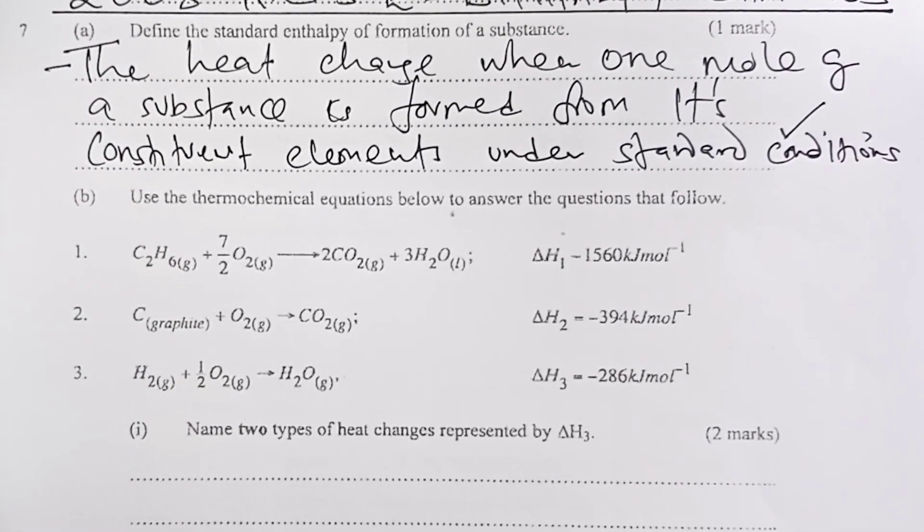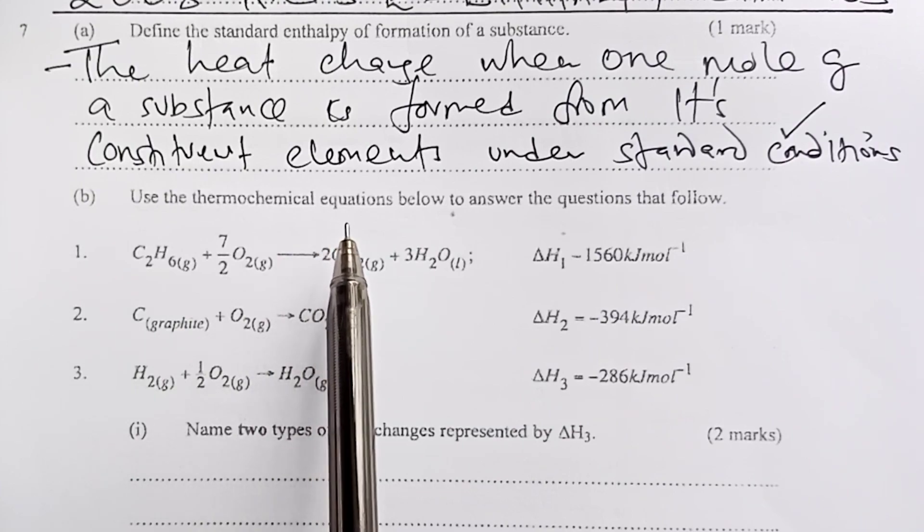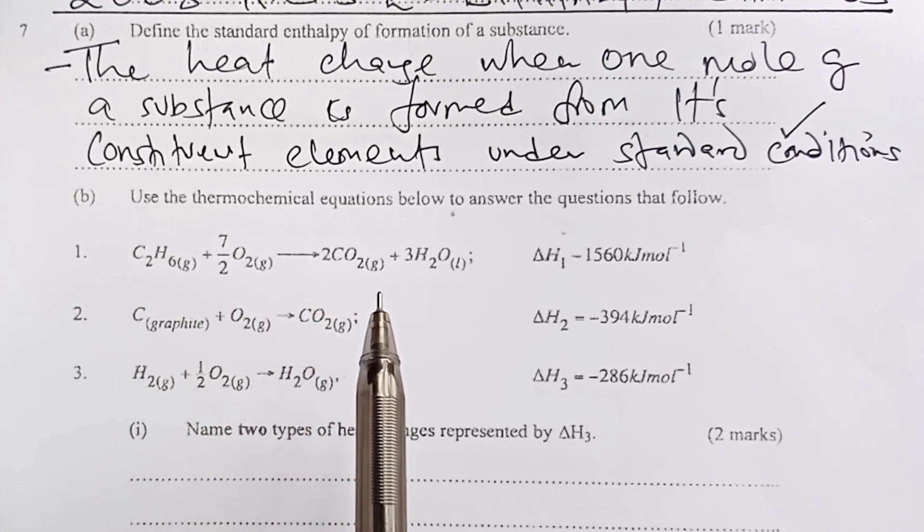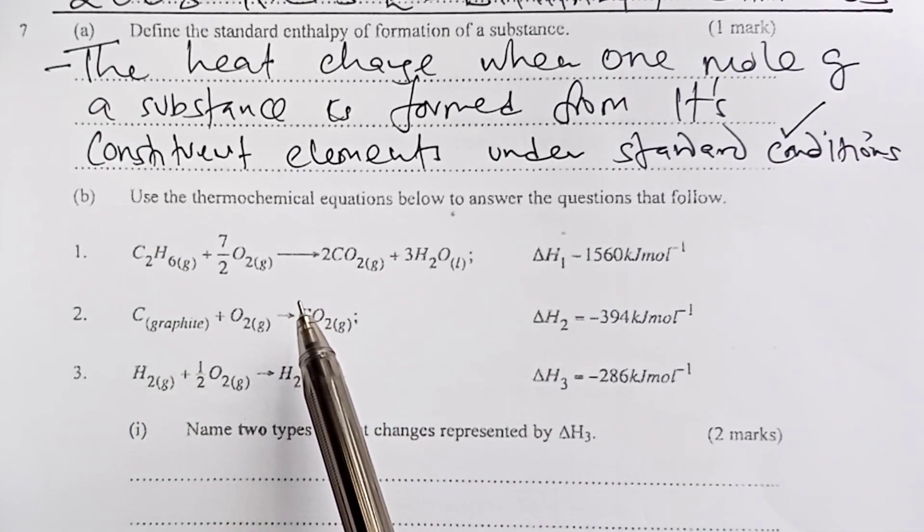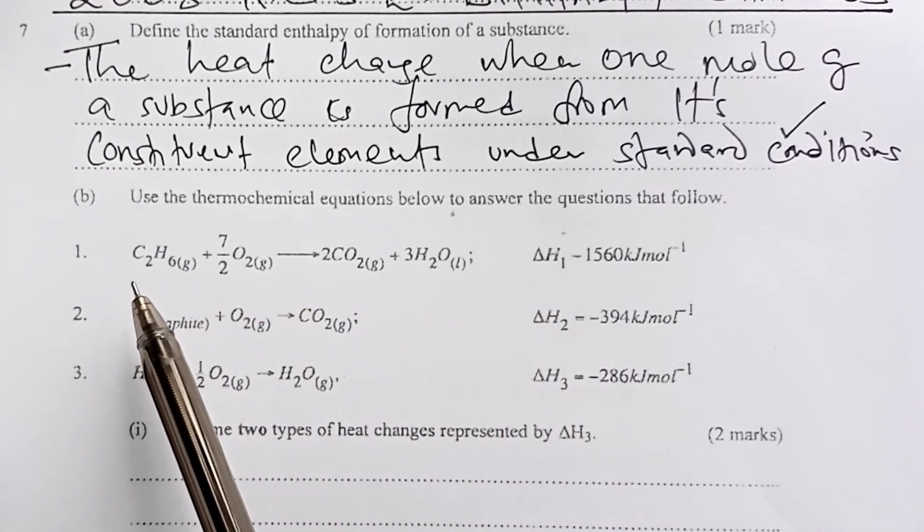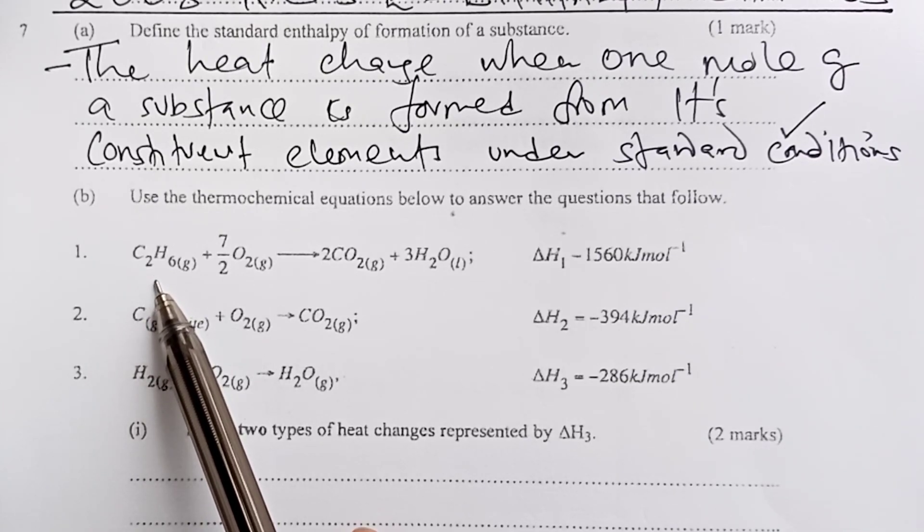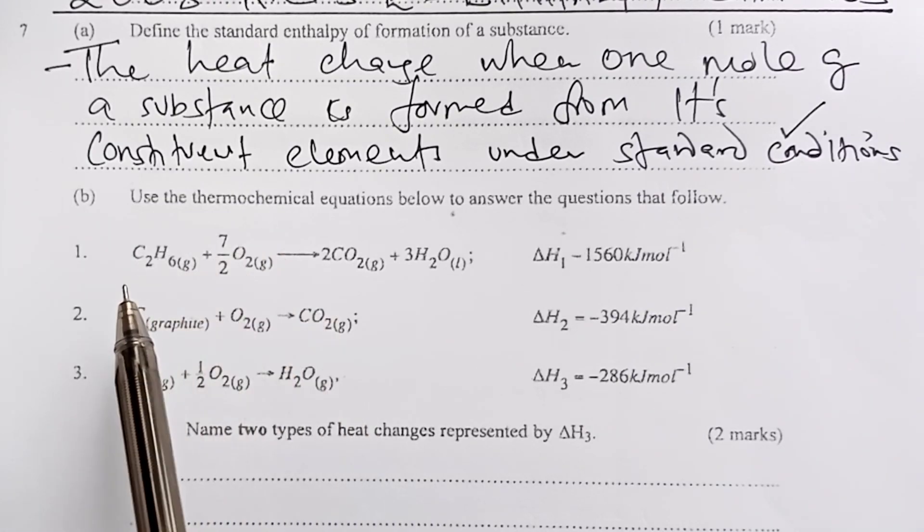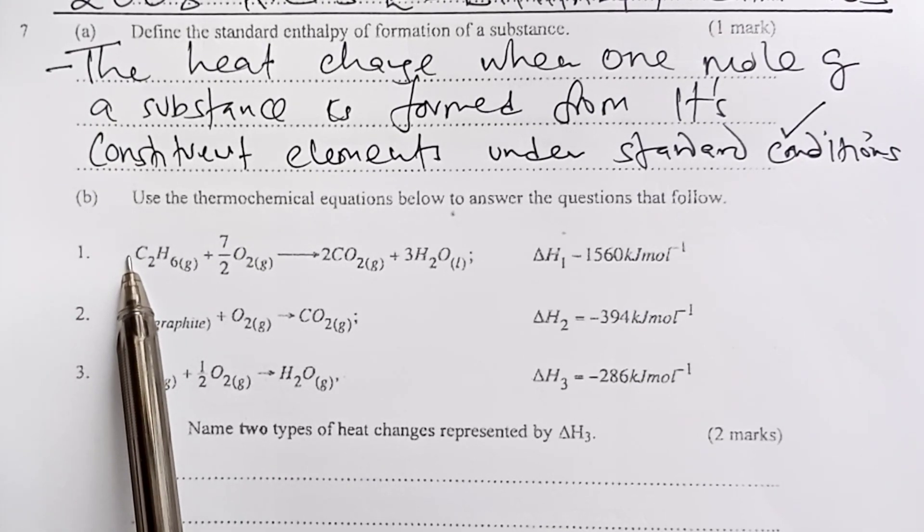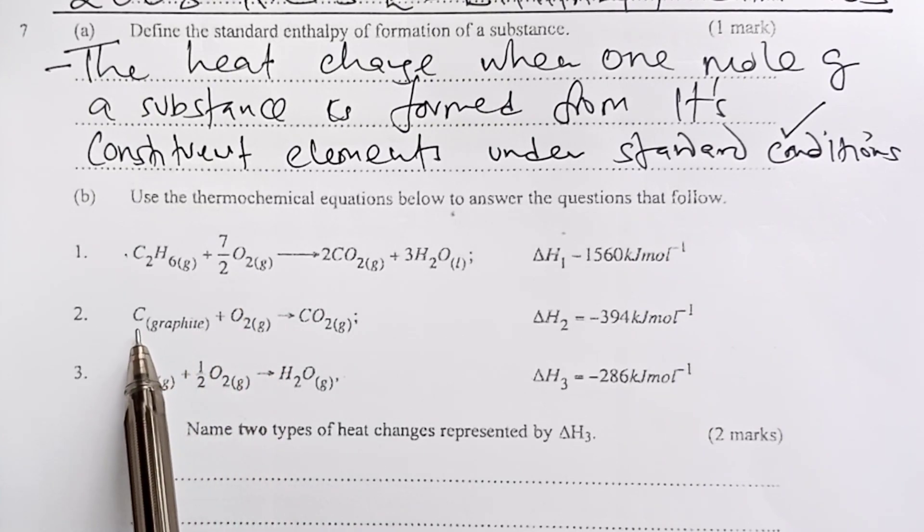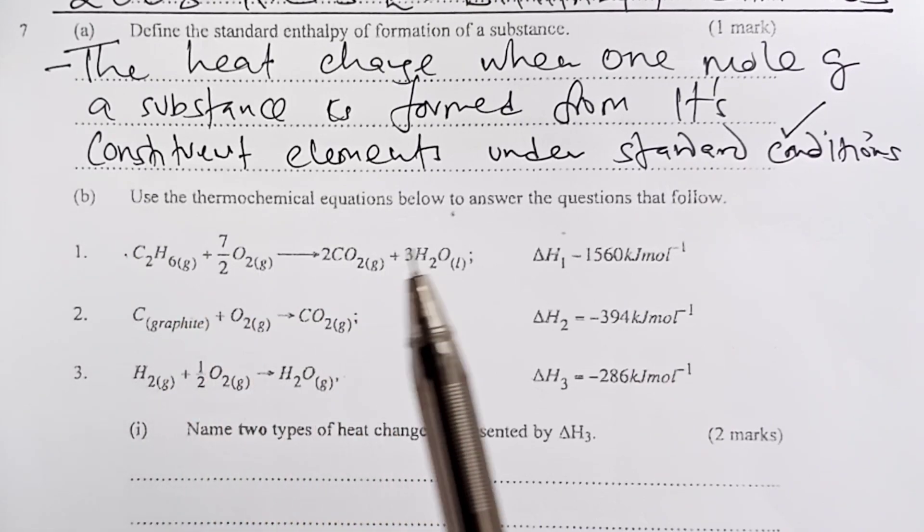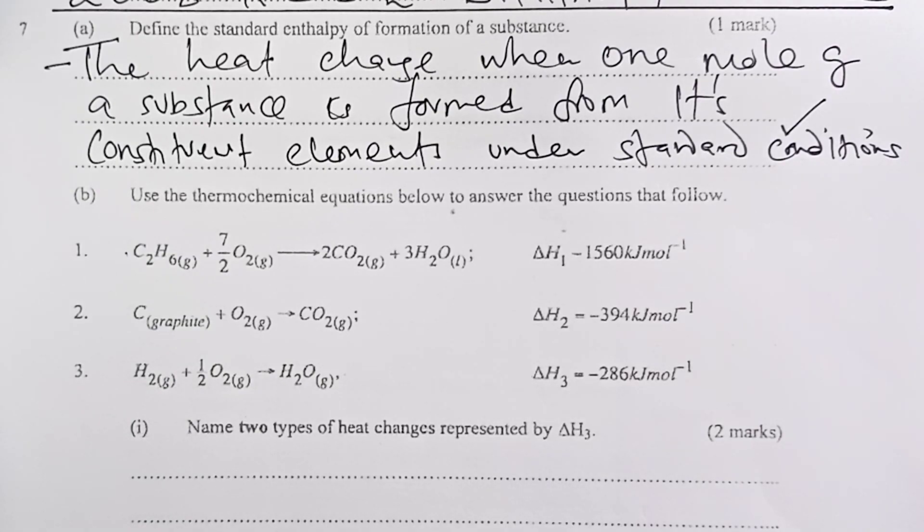In Part B, we are given thermochemical equations. A thermochemical equation is simply a balanced chemical equation that shows the heat change that accompanies the same reaction. Now here, because we want to preserve certain number of moles, we are allowed to use fractions in balancing. For example, in delta H1, we are burning one mole of ethane. So as we balance, we have to make sure that one mole is preserved on the substance being burnt. And for that matter, we are allowed to use 7 over 2 to balance the oxygens. The same happens for carbon and for hydrogen.